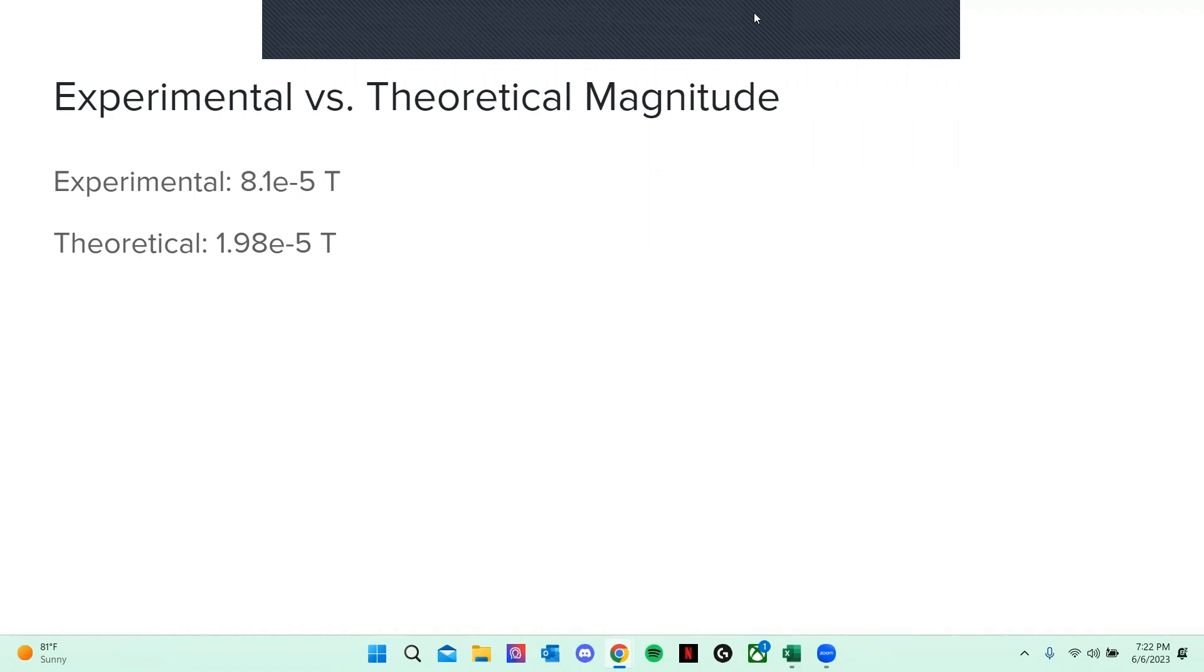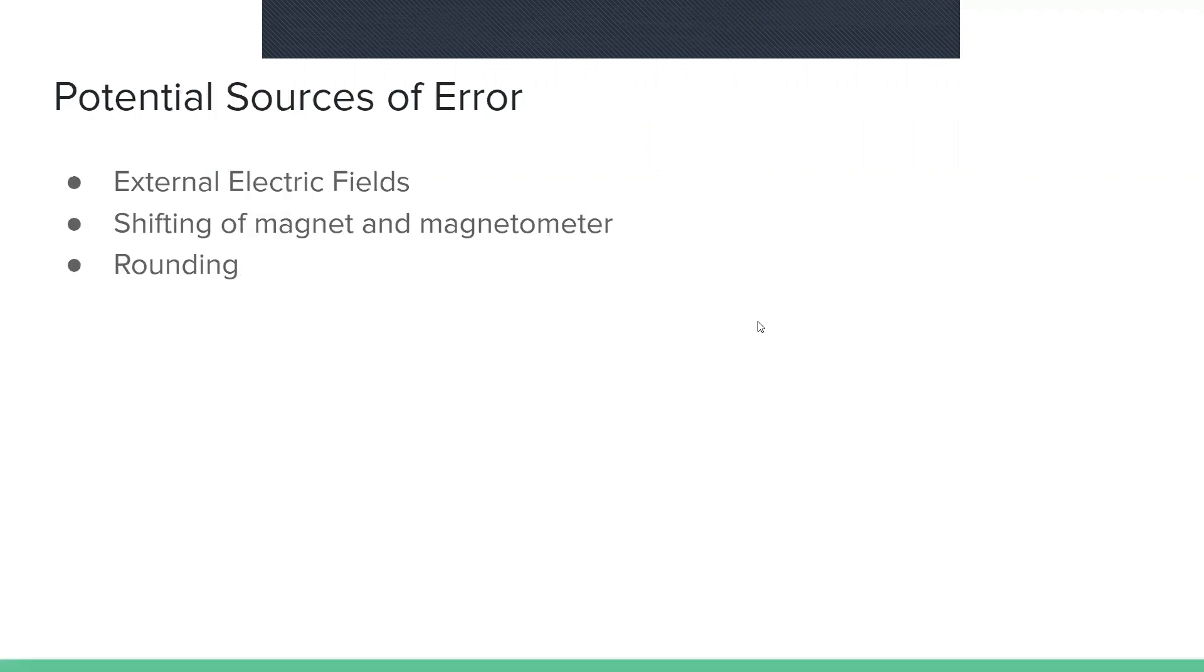However, there are many reasons why this could be. Potential sources of this error include external electric fields which would create magnetic fields, shifting of the magnet and the magnetometer, and rounding errors in math.